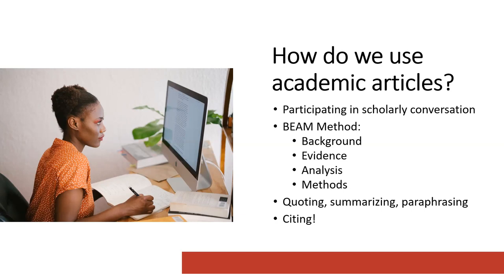One way of thinking about how to use academic articles is called the BEAM method — an acronym for Background, Evidence, Analysis, and Methods. We might use a source as Background to provide context that our audience will need to understand our research. We might use sources as an Exhibit — as evidence to support our own argument by pointing to the article's data, conclusions, or the interpretations the authors present. We might use a source as an Argument, engaging with it to support, contradict, or add nuance to our own arguments. And we might use a source as Method, applying the research methodology of a source to our own work.